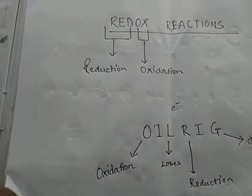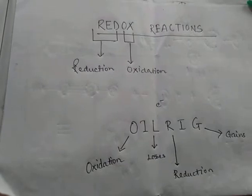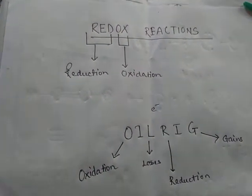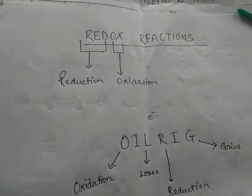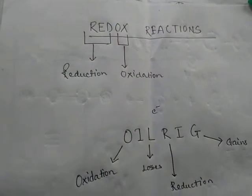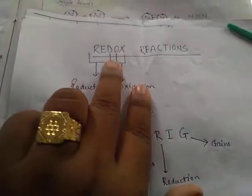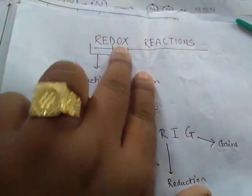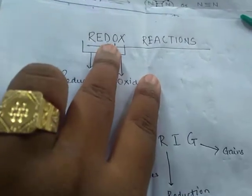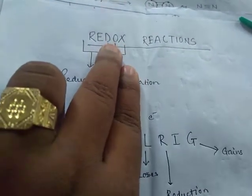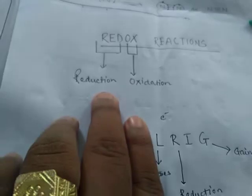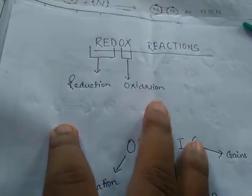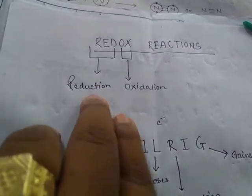Today I'm going to discuss an important chapter related to chemistry. The topic is redox reactions, which is from electrochemistry. If you follow the topic very carefully, it is very distinctly given: 'red' means reduction and 'ox' means oxidation. That means reactions where reduction and oxidation take place simultaneously are known as redox reactions.